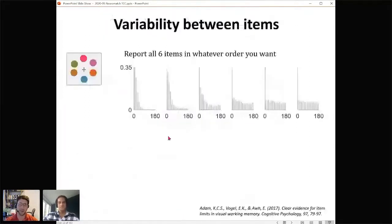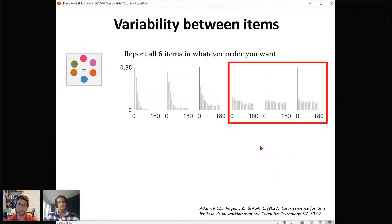One last bit, which is that variability between items is really crucial to why people think there are only three items in their head. Here's beautiful data from Kirsten Adam where people are asked to report all six items in whatever order they want. They see six colors, then they report all six items. This is the first one they report, this is the last one they report. You can see when you look at this, the last three things they report look almost just like random guessing, and they say look, that means people are only remembering three things.